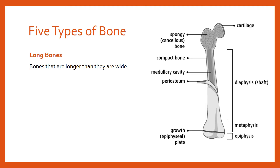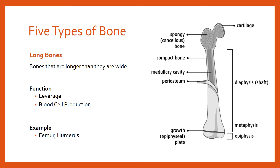Bone marrow is red or yellow, and it's there to produce, amongst other things, red blood cells. From the structure and content of the bone we can ascertain its functions. The first function is leverage: because long bones are long, with muscle attachments at either end via tendons, they enable movement of the skeleton. The second function is blood cell production — red and white blood cells are produced in the medullary cavity where the marrow is. Classic examples are the femur in the upper leg and the humerus in the upper arm.